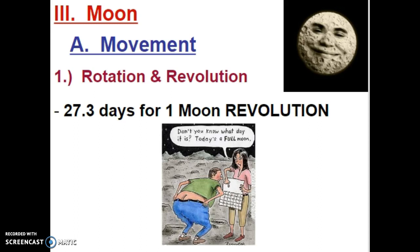The Moon is our only satellite that orbits the planet. The Moon's rotation and revolution are very unique. It takes 27.3 days for one Moon revolution — that means it takes 27.3 days for the Moon to go around the Earth one time.